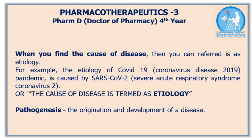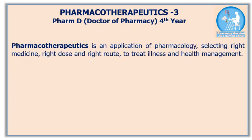Etiopathogenesis is made up of two words: etiology and pathogenesis. The cause of a disease is termed as etiology, whereas pathogenesis refers to the origination and subsequent development of a disease.